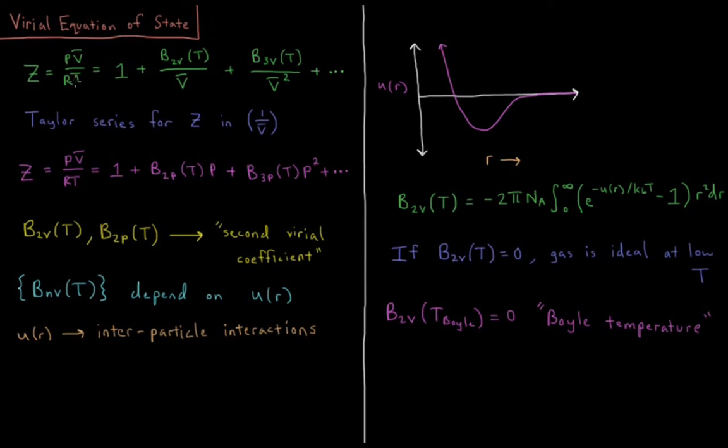So what are these various coefficients that we're getting here? So B2V of T is called the second virial coefficient. B3V is called the third virial coefficient, et cetera, from there on. And these also depend on temperature. So for a given temperature, there's a given value of this second virial coefficient and the third virial coefficient, and those all change with the different temperatures.